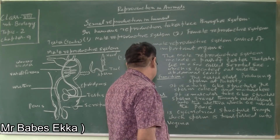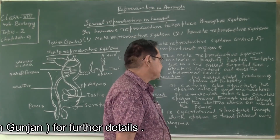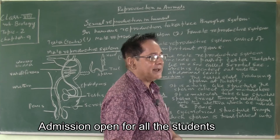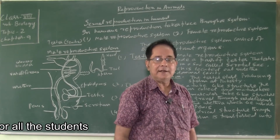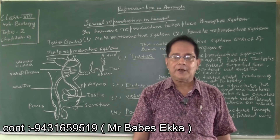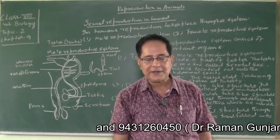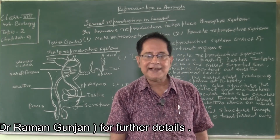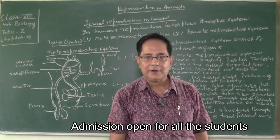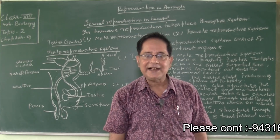The fourth part is the penis. It is a cylindrical structure through which sperm is transferred into the female part called the vagina. This is the structure of the male reproductive system and the important organs of the male reproductive system and their function.